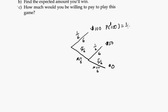So the probability of $100 is 1/6. The probability of $50 is 5 over 6 times 1 over 6. So that's going to be 5 over 36. And then the probability of winning nothing is 5 divided by 6 times 5 divided by 6. So that's going to be 25 over 36.